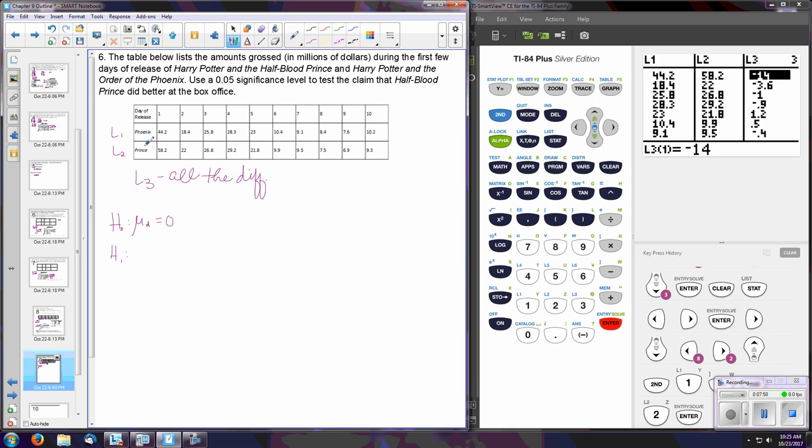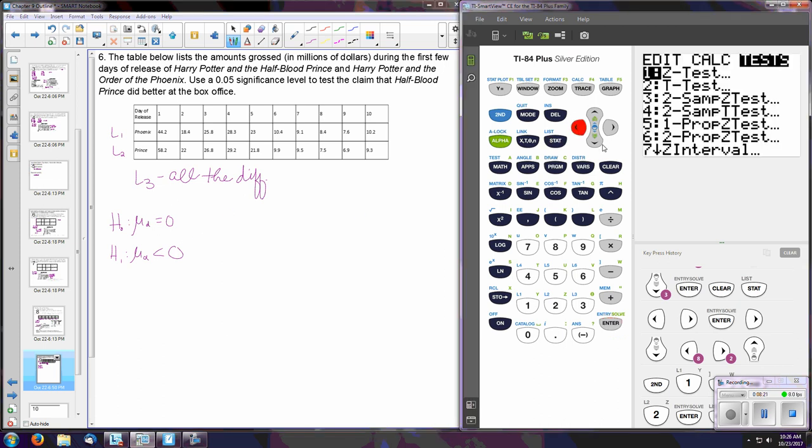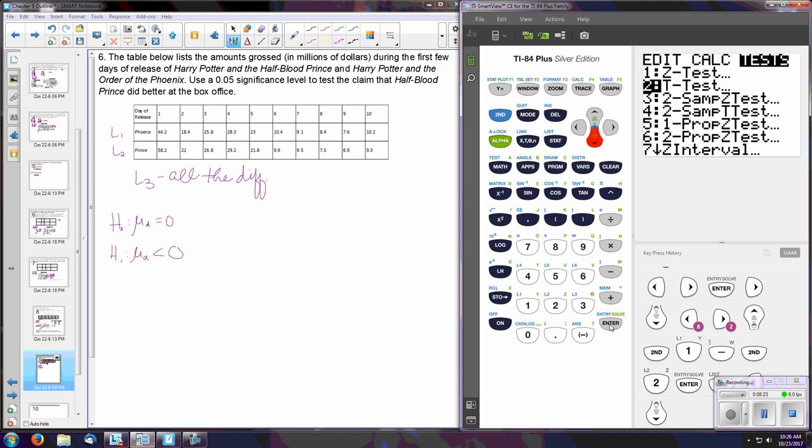And the alternative hypothesis—this is what exactly? That the Order of the Phoenix did not as well as the Half-Blood Prince. So if you subtract these, that means their differences should be negative. In other words, Half-Blood Prince did better, so these are the bigger numbers. So that means mu-d is actually less than zero. So we're testing to see if the differences are less than zero.